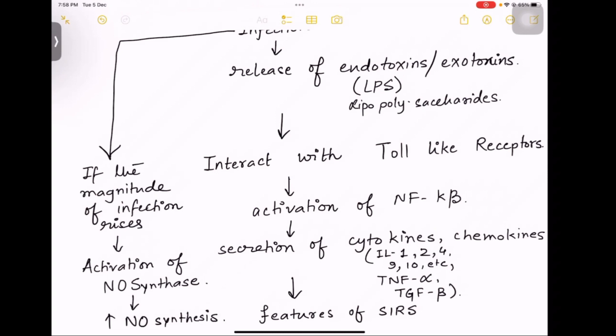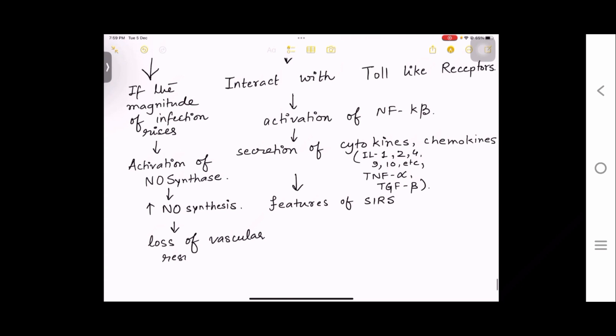Now we know that nitric oxide is a vasodilator. So this will dilate the blood vessels, leading to more release of blood in a particular area and that will lead to warm extremities.